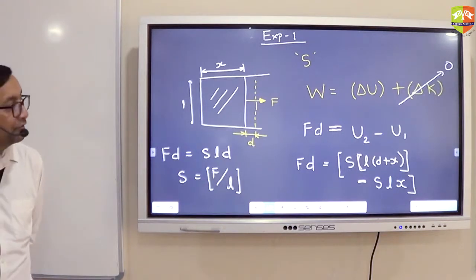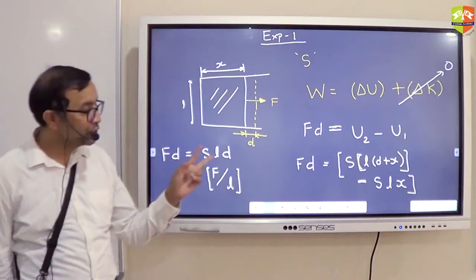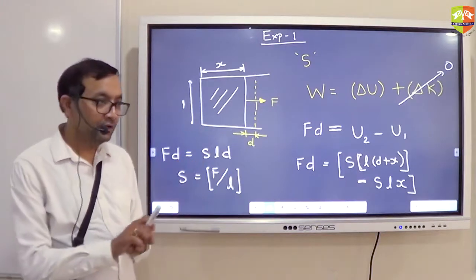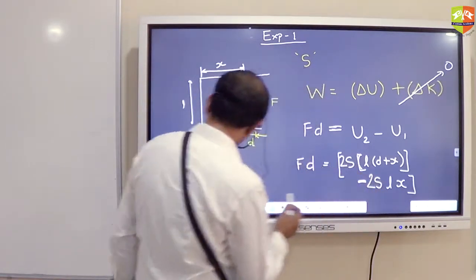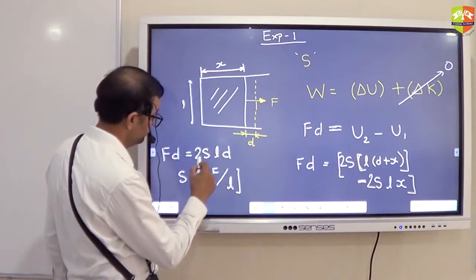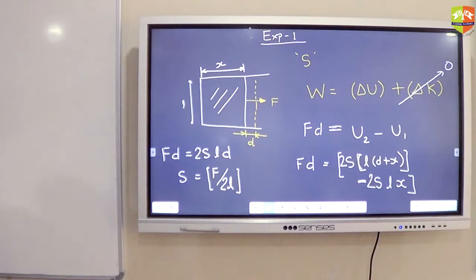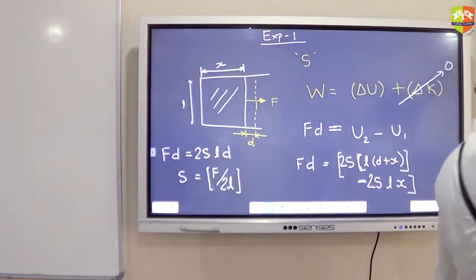How many surfaces are there? Two surfaces. One above, one below. So this film has two surfaces. So surface energy will be two times. So surface tension into two, so there will be factor of two. Above and below.